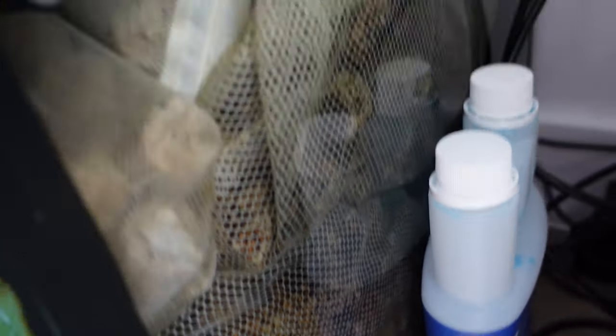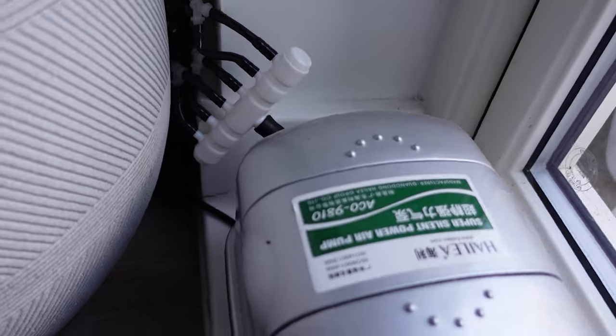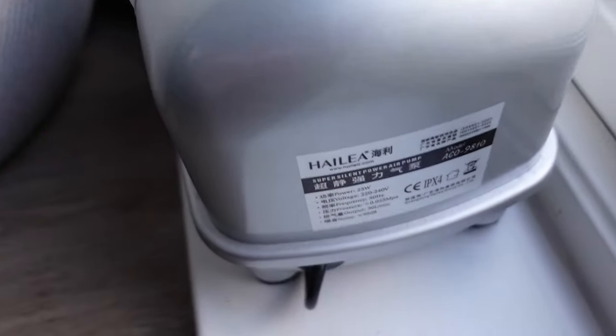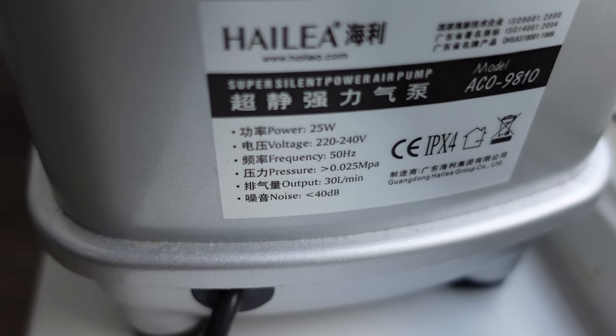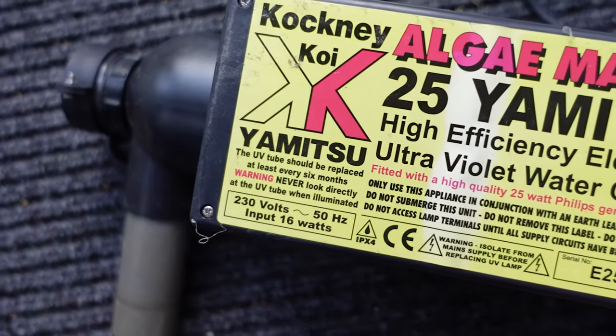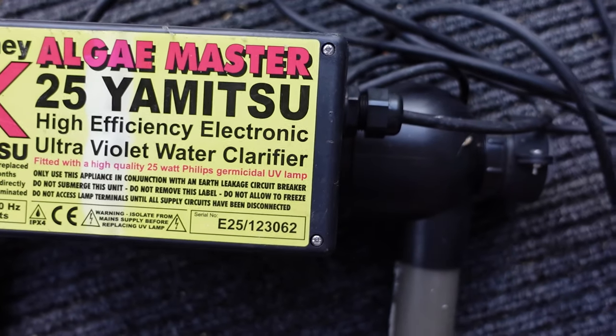I have ceramic rings, ceramic balls, Alpha Grog, Bio Home—there's around 30 to 35 kilos of media in that section. It's run by this Hailea 25-watt, 30 liter per minute air pump, which drives air up a tube and returns the water back into the tank.